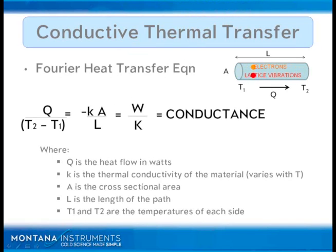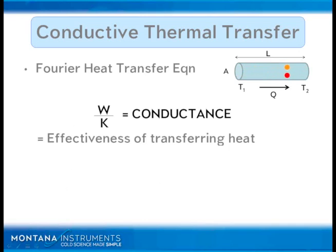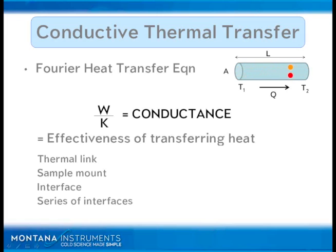Many of you may already be familiar with this, but if you're not, this is a great way to analyze parts of the system when it comes to looking at how well you're transferring heat. Watts per Kelvin — conductance — is basically a measure of the effectiveness of transferring heat. You can look at a thermal link, a sample mount, a certain interface or series of interfaces, or different materials. Whether you're looking at a new design, a new thermal link, or some new connection with a fancy material or geometry — it doesn't matter. Let's just look at the conductance, because that's all that really matters.